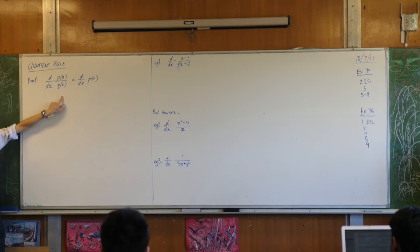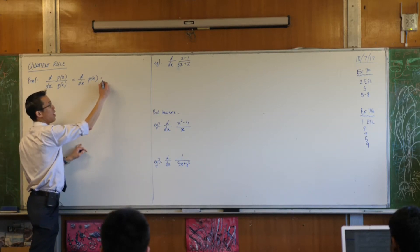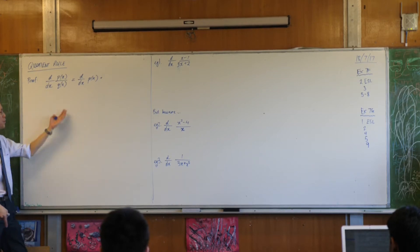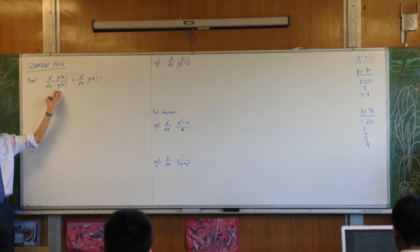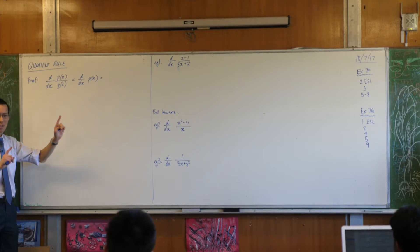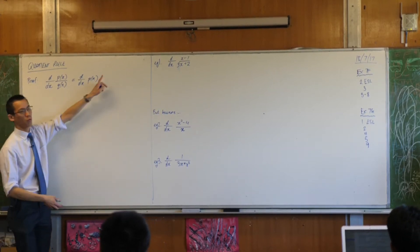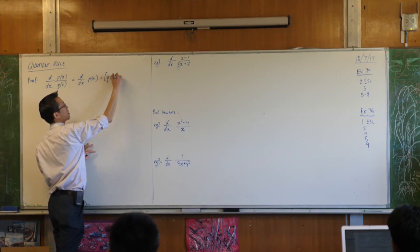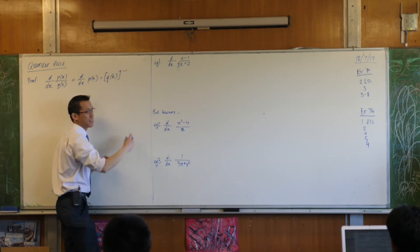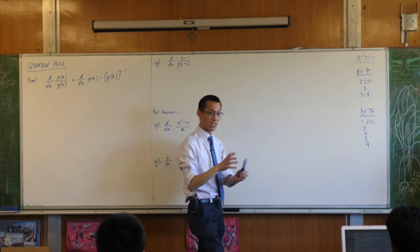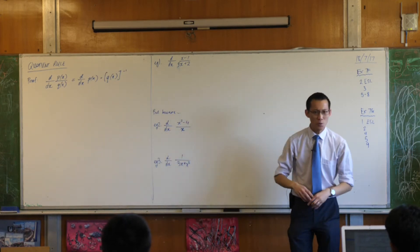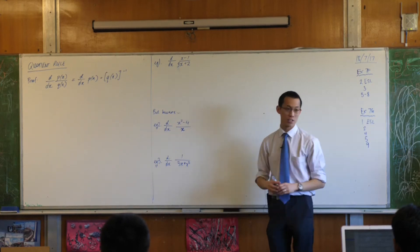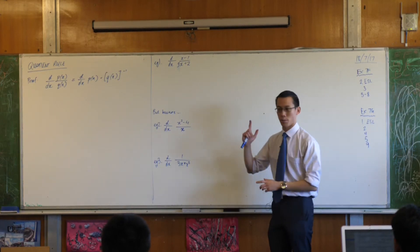What would I have to multiply this by that would achieve the same effect as dividing by q of x? 1 over q of x would do the job. However, I'm going to do one slightly different thing. Rather than write it as 1 over q of x, I'm going to write it as q of x to the power of negative 1. The reason why is because in terms of differentiating, I know what to do with powers, I'm quite good at those. So I'm trying to draw on all this prior knowledge to be able to tackle this new problem.